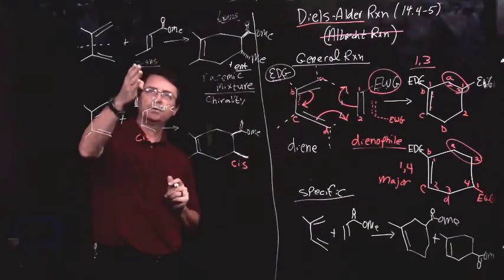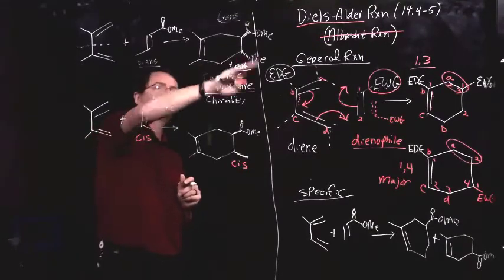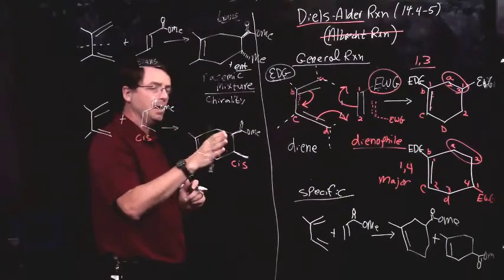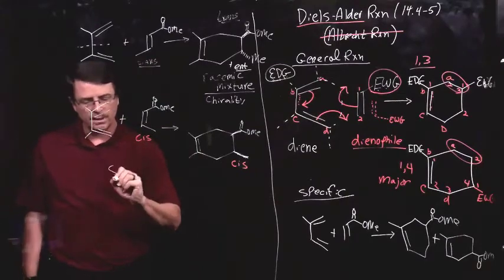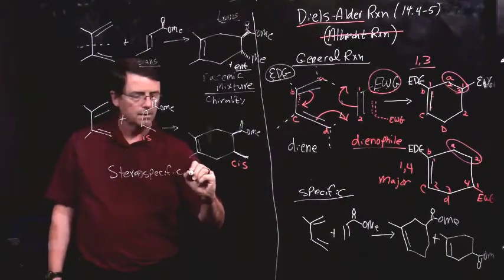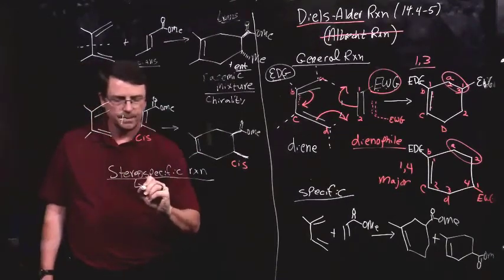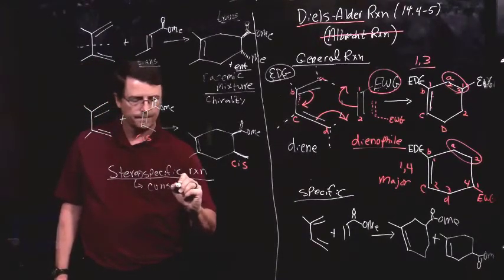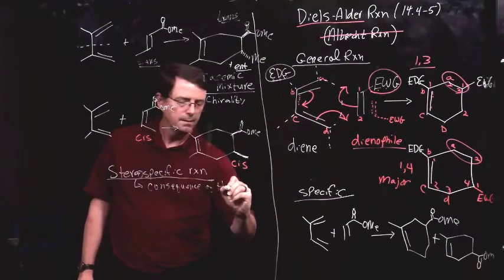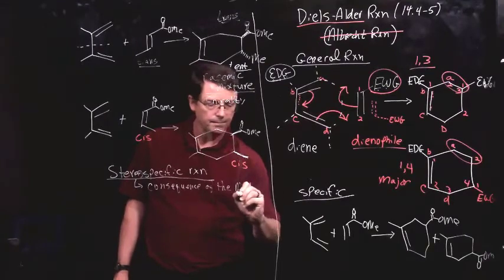Now, when we have this particular thing where one stereochemistry in the starting material relates to a specific stereochemistry in the product, and the opposite stereochemistry in the starting material relates to the opposite stereochemistry in the product, we call this a stereospecific reaction. Okay? That is, the stereochemistry is a consequence of the mechanism.